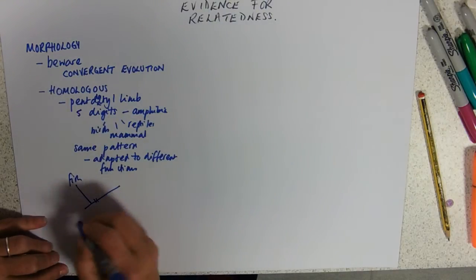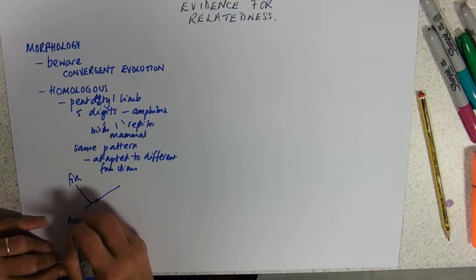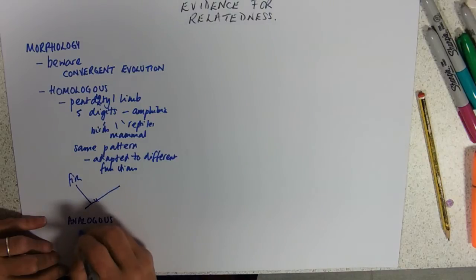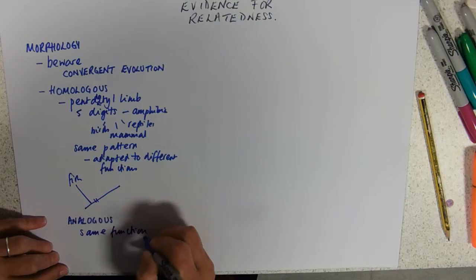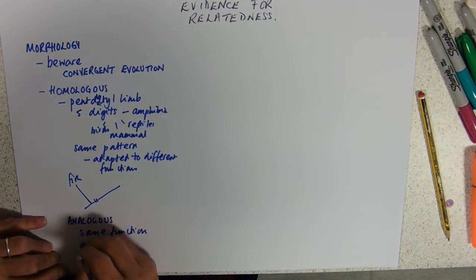They're called homologous structures. As opposed to analogous structures. Where they've got the same function. But they've evolved from different structures.